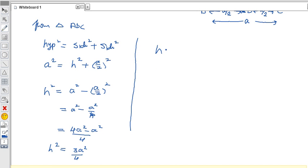But we need only the h value, so h equals the square root of 3a squared by 4. If you apply the square root, that is root 3 times a by 2. This is the height of the equilateral triangle: root 3 by 2 into a.